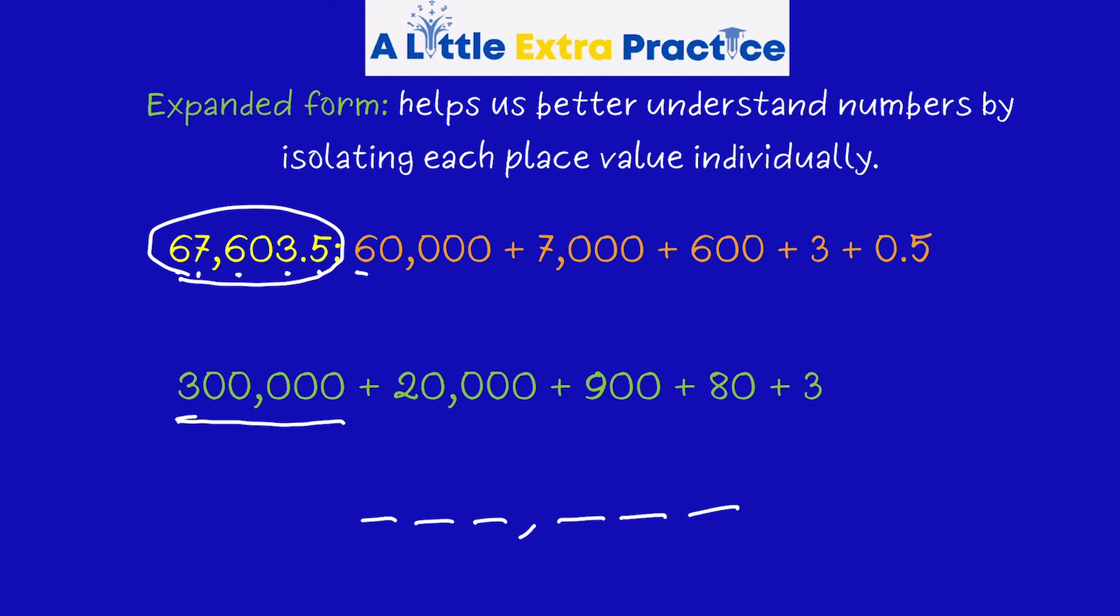From there, I'm just going to go in and fill in the number according to place value. I could start large, I could start small. In this case, I think I'm going to start large. The 3 is in the 100,000s. The 2 is in the 10,000s. There's a 9 in the 100s, 8, and 3. I can't leave this blank, so I fill it in with a zero. This is the expanded form for 320,983.